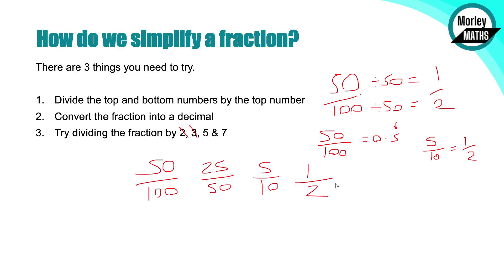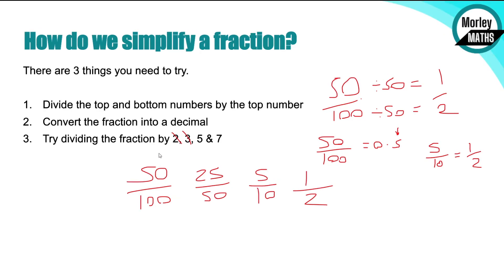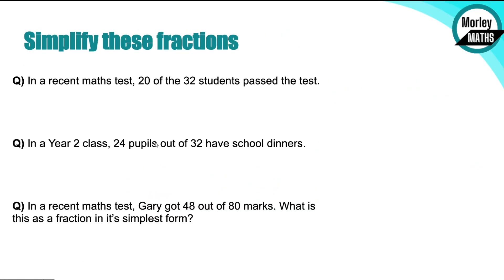So those are the three methods you want to be trying when you do simplifying fractions. You probably want to try number one first, then number two, and if that one doesn't work - so let's say you've got a decimal value that's got about five different decimal places, it's not going to be worth doing that decimal method - then try this one final method, which is 2, 3, 5, and 7. We've got some practice questions we're going to have a little look at now. So what I want you to do is have a go at these questions and pause the video.